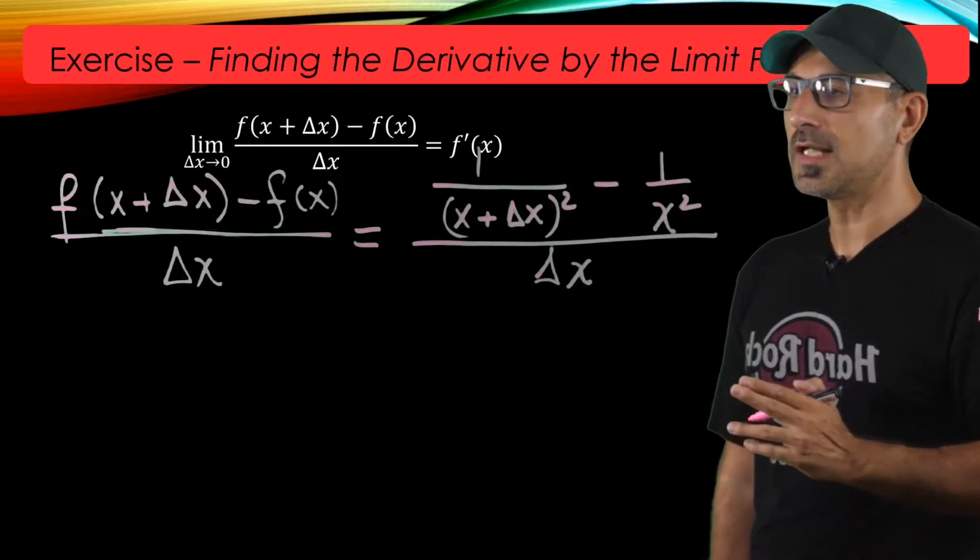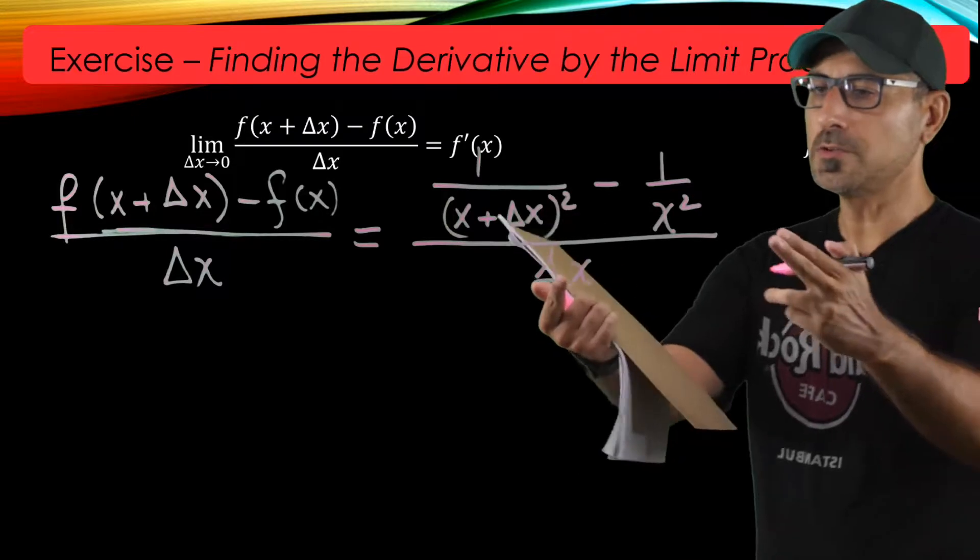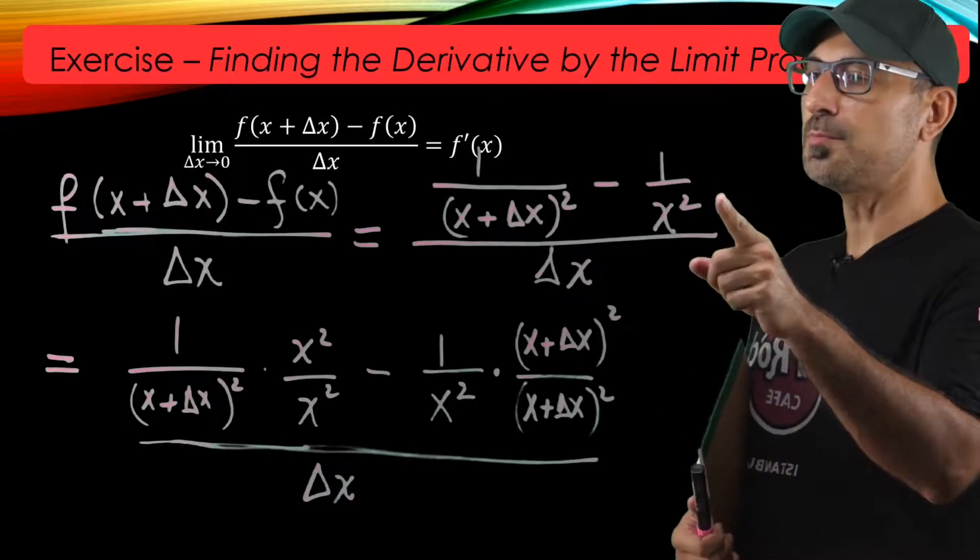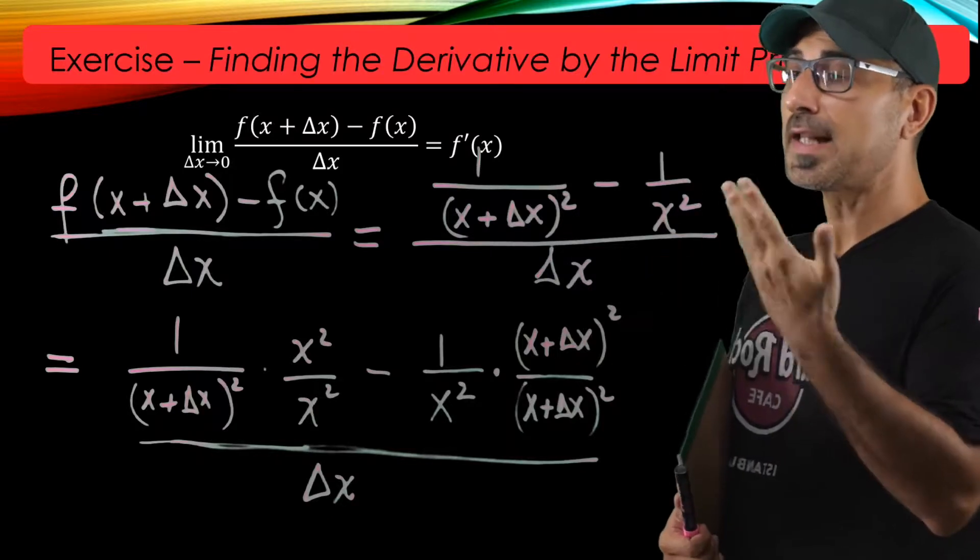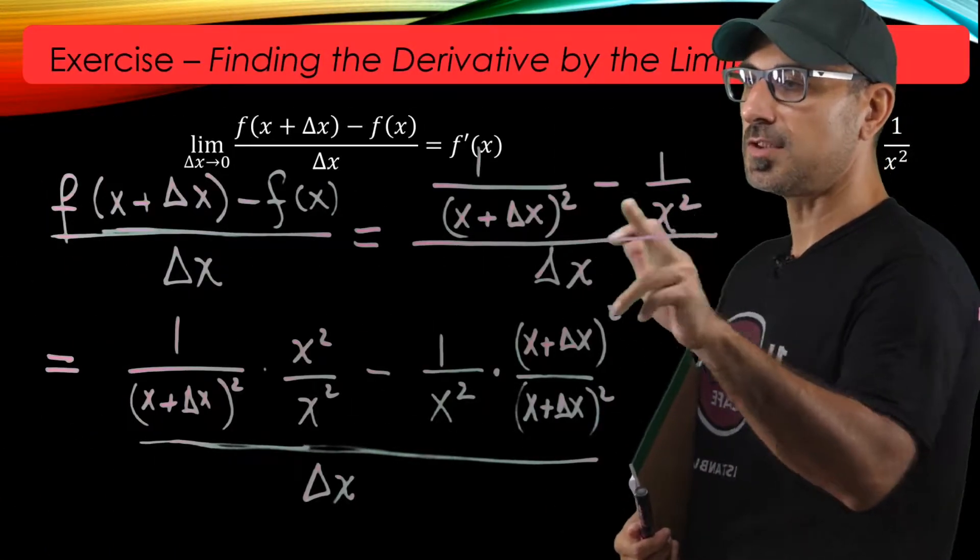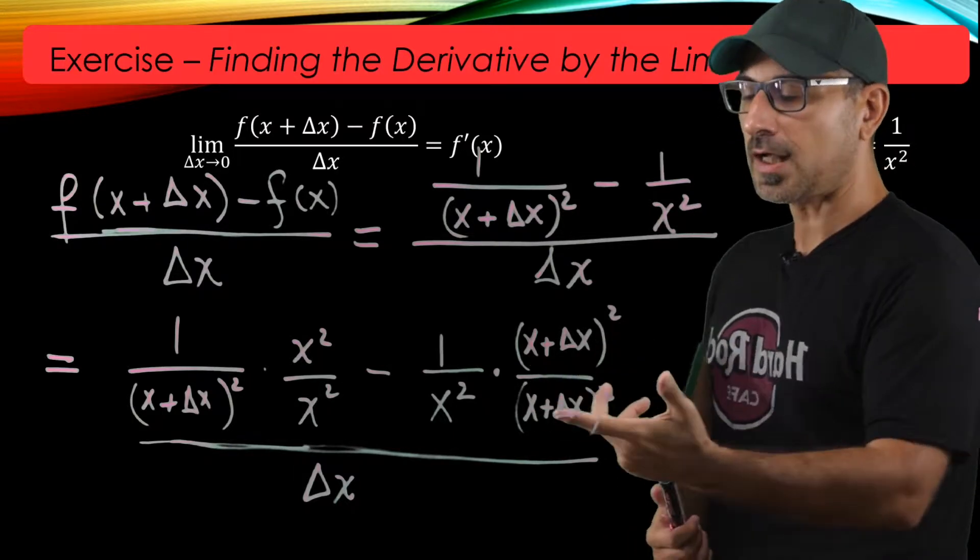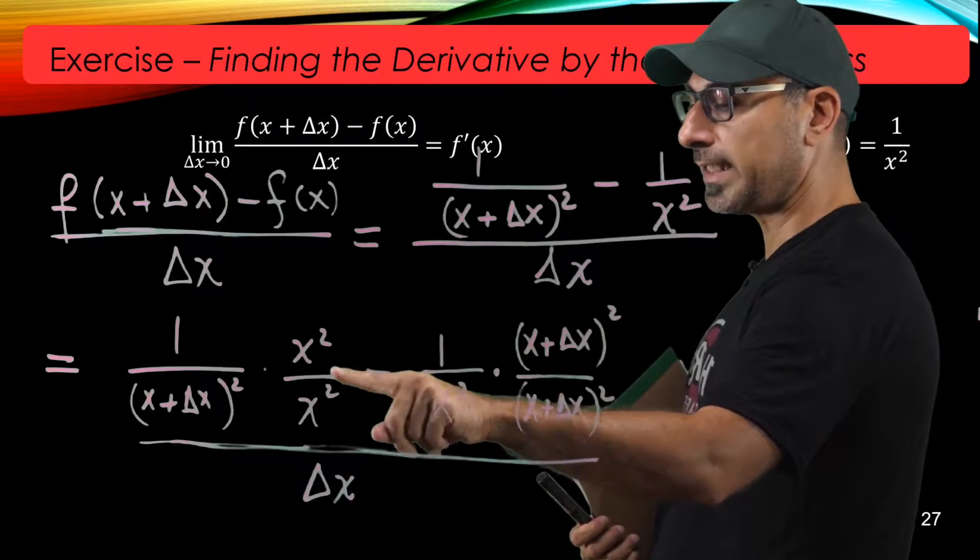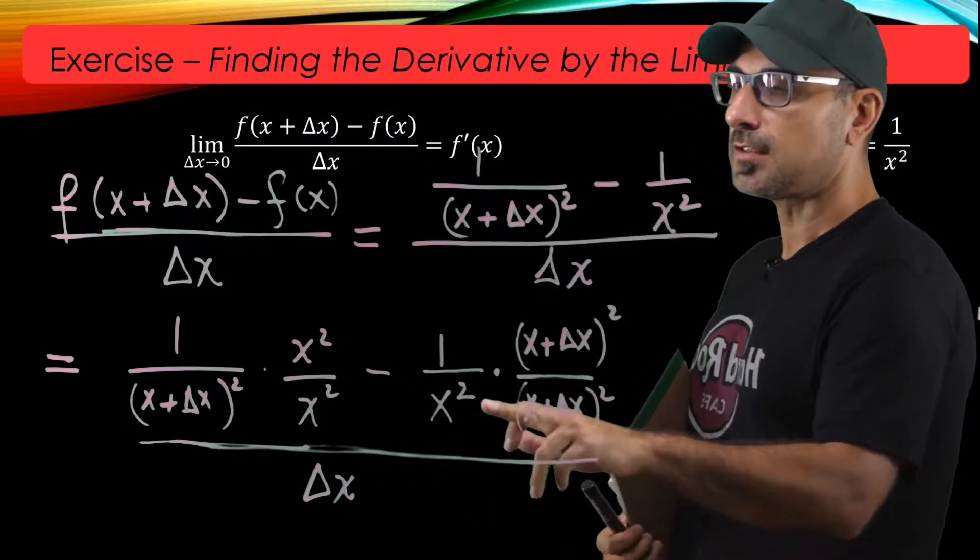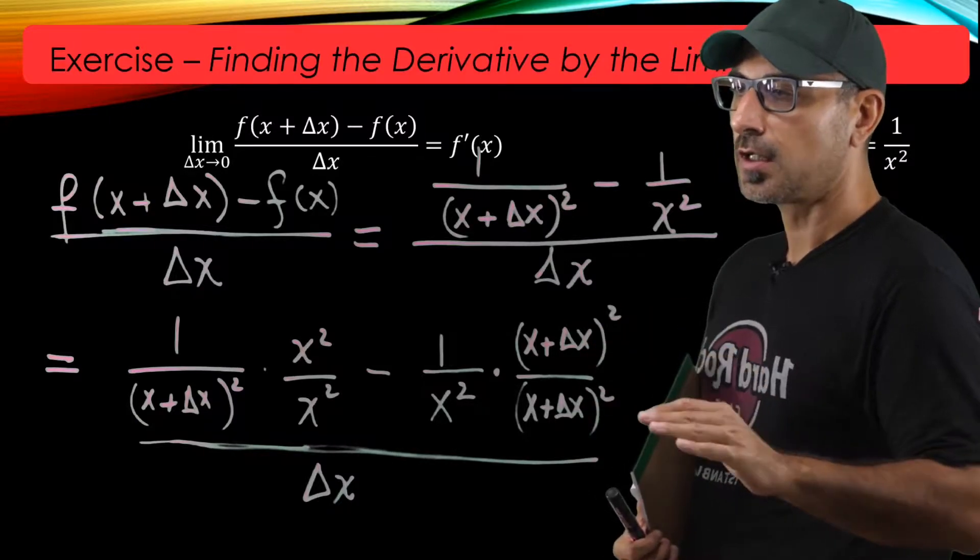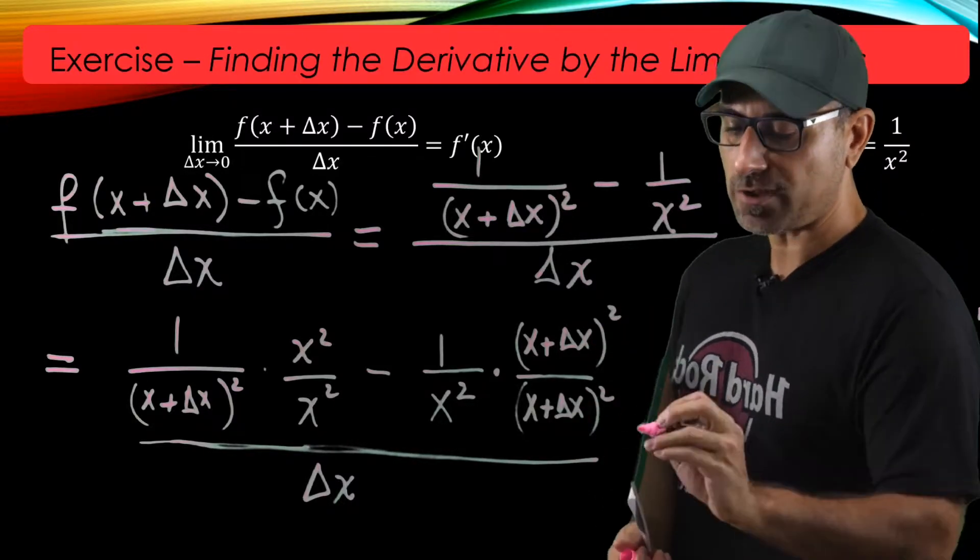So why don't we find a common denominator and bring these two ratios into one ratio. The way we simplify the top is to find a common denominator. The common denominator is going to be the product of these two. So to achieve that common denominator, the first ratio is multiplied and divided by x squared. The second ratio is multiplied and divided by x plus delta x quantity squared.